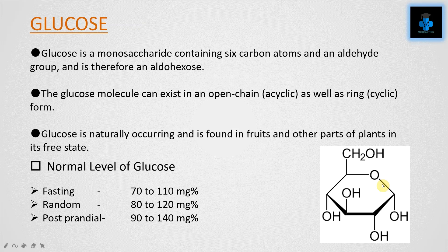Glucose is a monosaccharide containing six carbon atoms and an aldehyde group, and is therefore an aldohexose. The glucose molecule can exist in an open chain as well as in ring form. Glucose is naturally occurring and is found in fruits and other parts of plants in its free state. The normal fasting level of glucose is 70 to 110 mg%; in random checking it is 80 to 120 mg%; and in the postprandial condition it is 90 to 140 mg%.